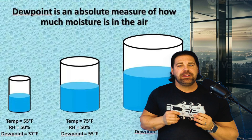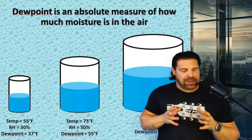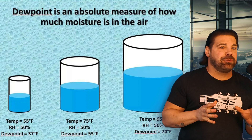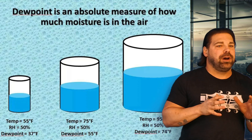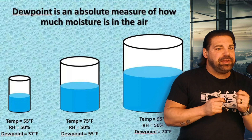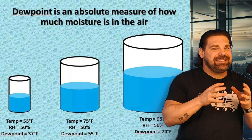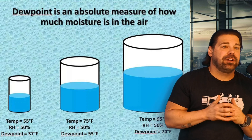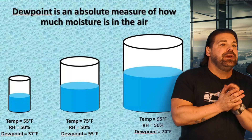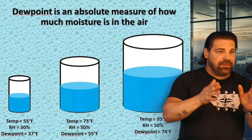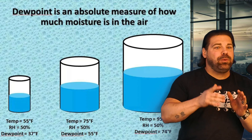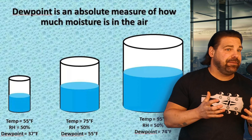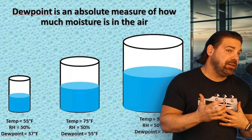What is dew point? It's a meteorological term that refers to the temperature of a volume of air at which it becomes saturated, or full, with water vapor. That water vapor then starts to condense into liquid water. What we often see is fog or clouds. Now depending on the temperature of that volume of air, that will determine how much water that volume of air can in fact hold — so it's dependent on temperature.